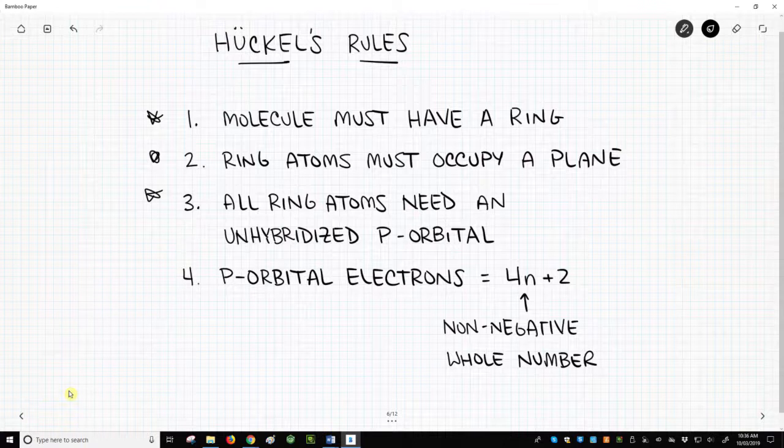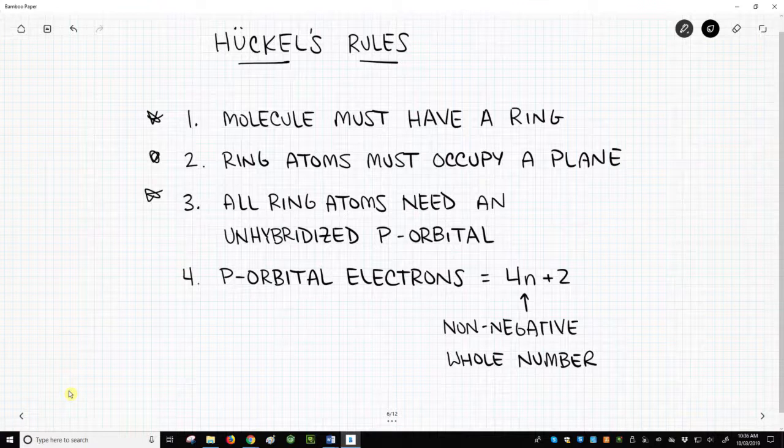3. Every atom in the ring must have an unhybridized p orbital. In practice, this means that each atom must be sp2 hybridized. 4. The number of electrons in those p orbitals must fit the equation of 4n plus 2, where n equals any non-negative whole number.